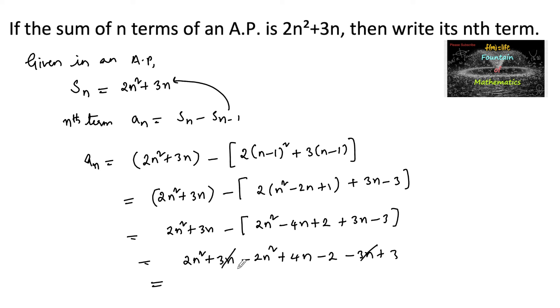So we can cancel 3n and 3n, and negative 2n square and 2n square gets cancelled, and we have 4n minus 2 plus 3 is plus 1. So 4n plus 1 is the answer. That is the nth term.